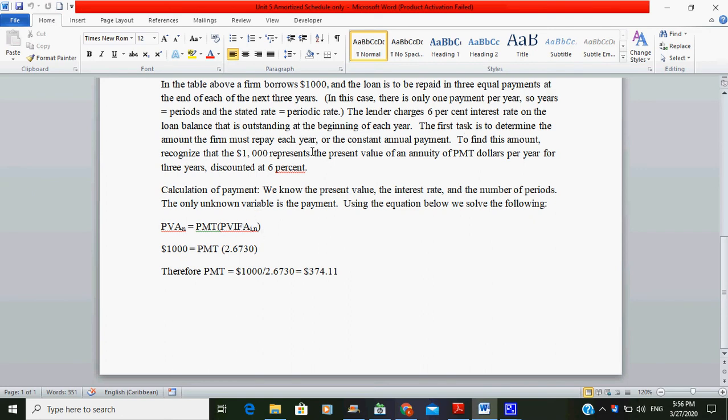Remember that we are saying to find this amount, recognize that the $1,000 represents the present value of annuity of PMT. Therefore, the $1,000 is the present value of annuity in this case. It will be equal to PMT, which is what we want to find. We have 2.673. How do you get this?